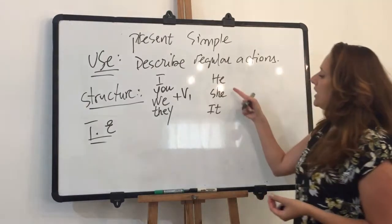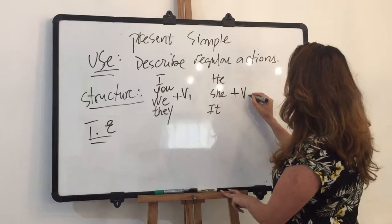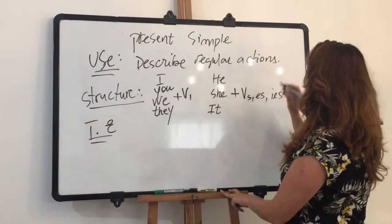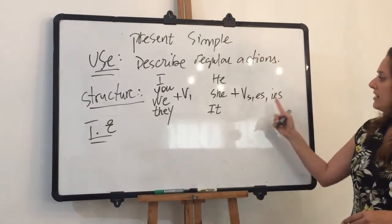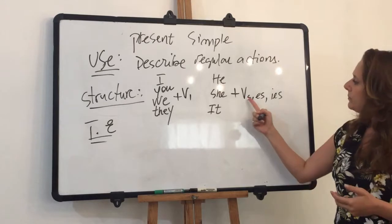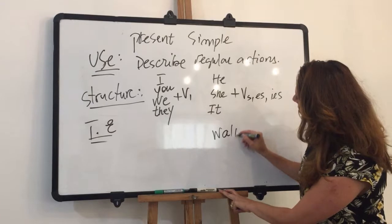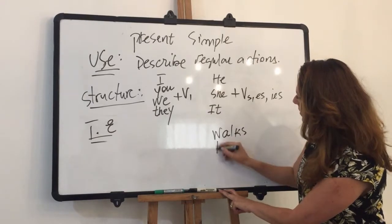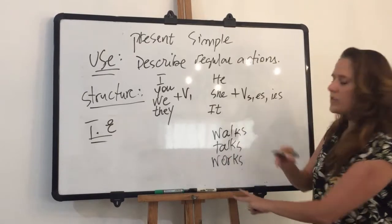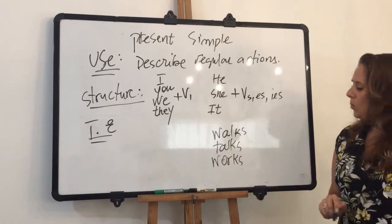When I talk about the second group — he, she, and it — I use the verb with an addition: S, ES, or IES. For most regular verbs, I add S. So it can look like: walks, talks, works. He walks, she talks, it works.